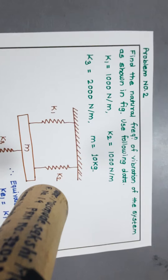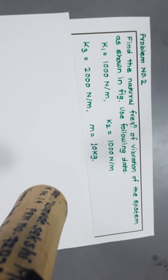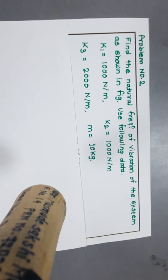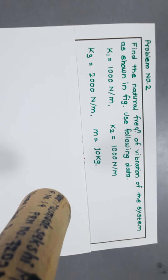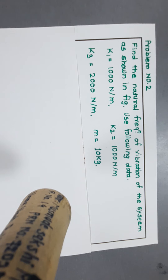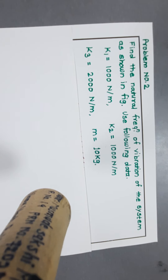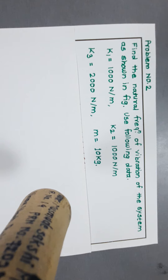Now we will solve the second numerical. Find the natural frequency of vibration of the system as shown in the figure, using the following data: k1 = 1000 N/m, k2 = 1000 N/m, k3 = 2000 N/m, and m = 10 kg.